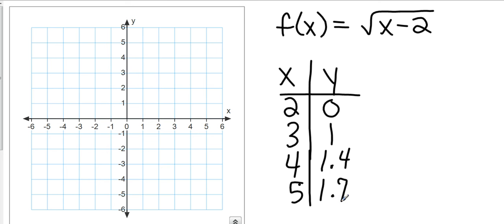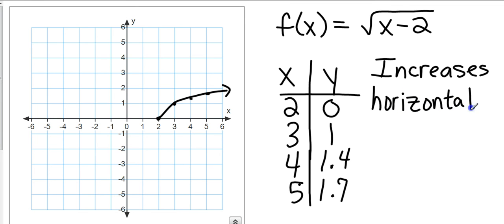So, let's see what this does to my parent graph. We've got 2, 0. 3, 1. 4, 1.4. And 5, 1.7. So, you'll notice this one increases horizontally. Increases horizontally by 2. And so, just on this last one, let's go ahead and look at the domain and the range.